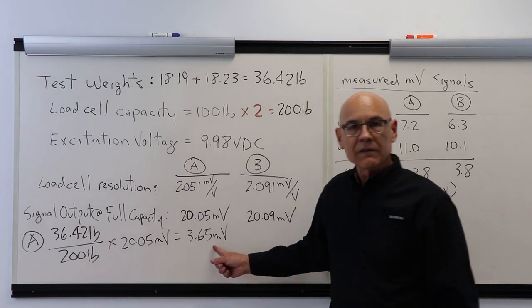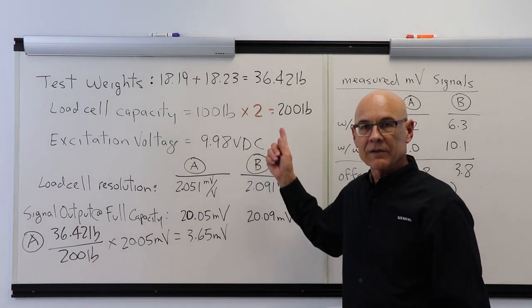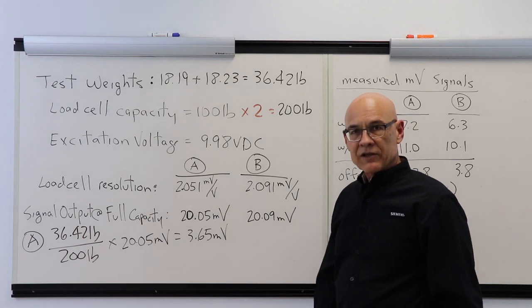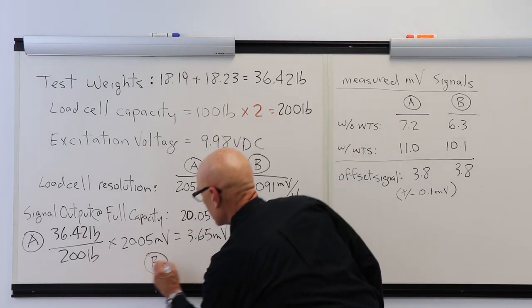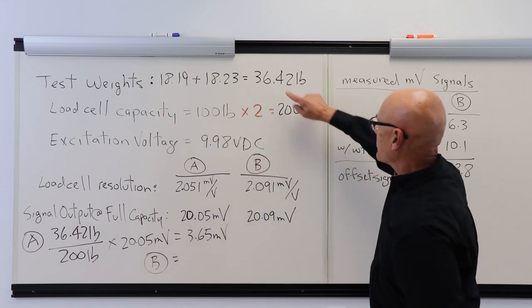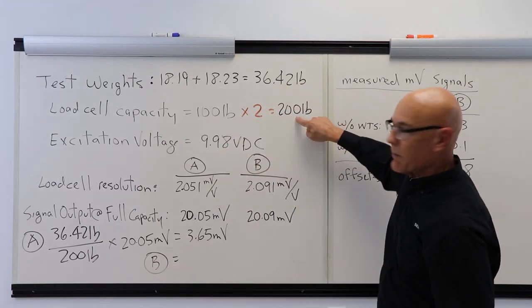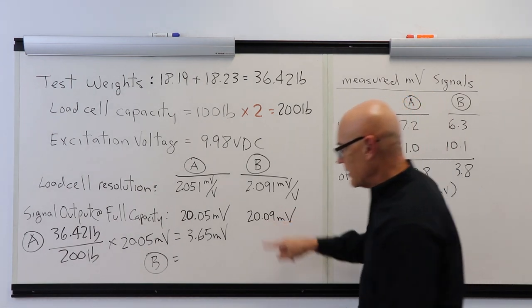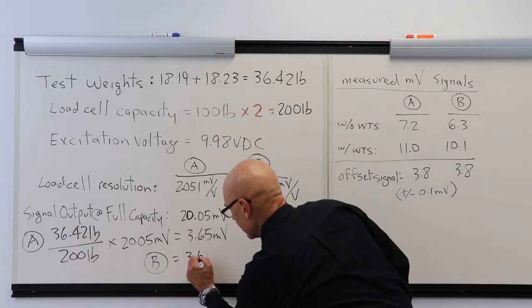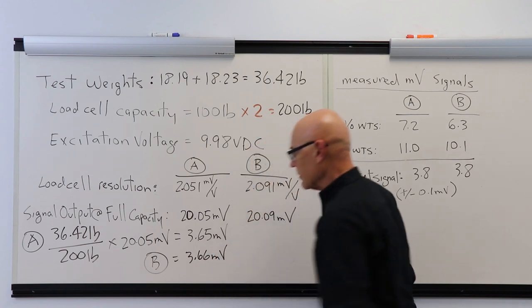Doing the same calculation for load cell B, it's going to be 36.42 divided by 200 times 20.09 millivolts. I'm going to get 3.66 millivolts of signal offset.